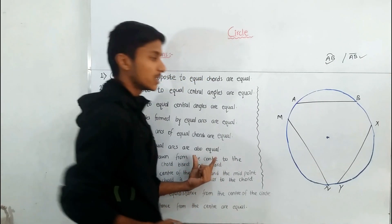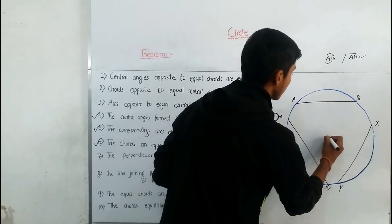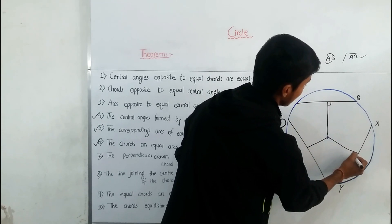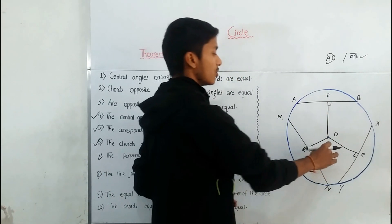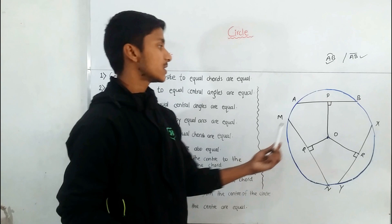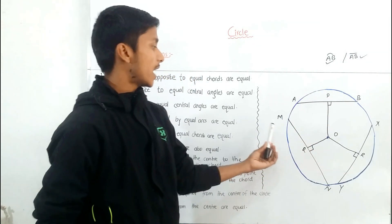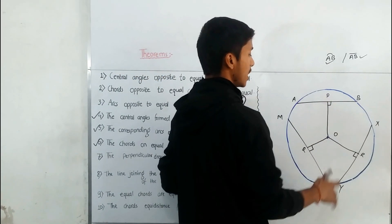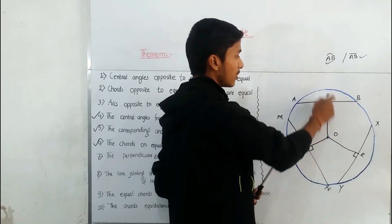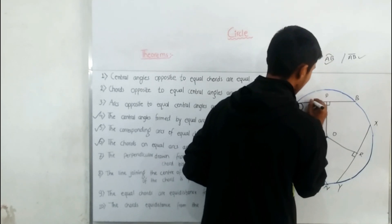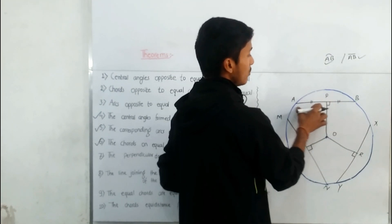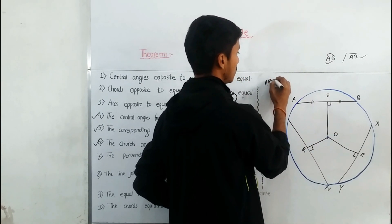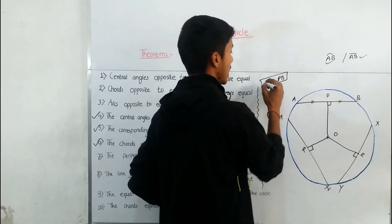Theorem 7: the perpendicular drawn from the center to a chord bisects the chord. Here OP, OQ, and OR are the perpendiculars drawn from the center to chords AB, MN, and XY respectively. Chord AB has OP as the perpendicular drawn from the center, so according to this statement it bisects the chord — meaning AP is equal to PB, so P is the midpoint of AB.